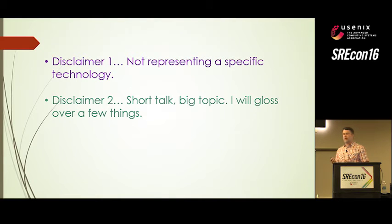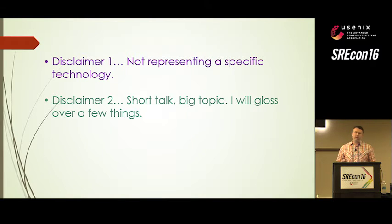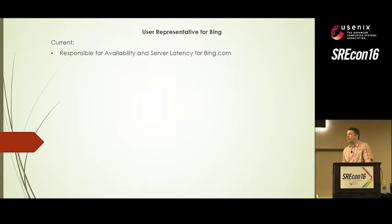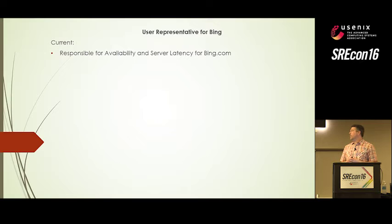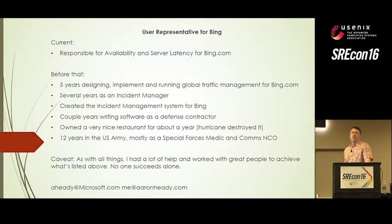It's an incredibly diverse and complex topic, and I'm going to gloss over a bunch of things. We just can't cover everything in this short 20-minute talk. My role at Microsoft and Bing is I'm the user representative for Bing — my job is to go into meetings and focus on availability and latency. But previously, I spent about five years focused on global traffic routing, the day-to-day implementation for Bing.com and several of our partners.